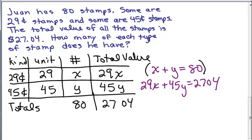So if I multiply that top equation by negative 29, and remember, that means you've got to multiply each term on both sides of the equation by negative 29. This is what it would look like.